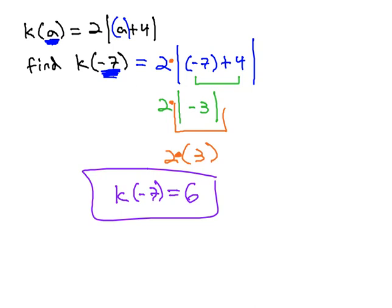Function notation is simply asking us to replace the variable with the number it represents in the notation. Then, we simplify the expression.